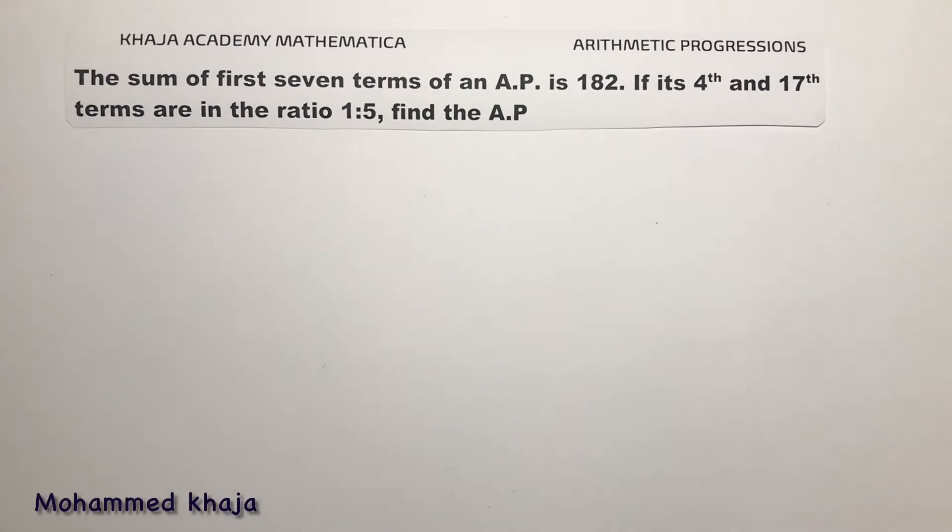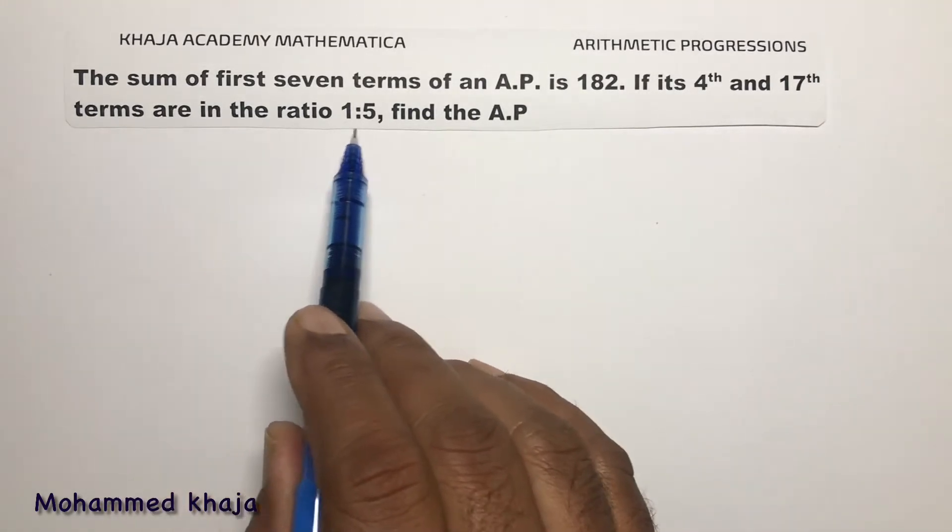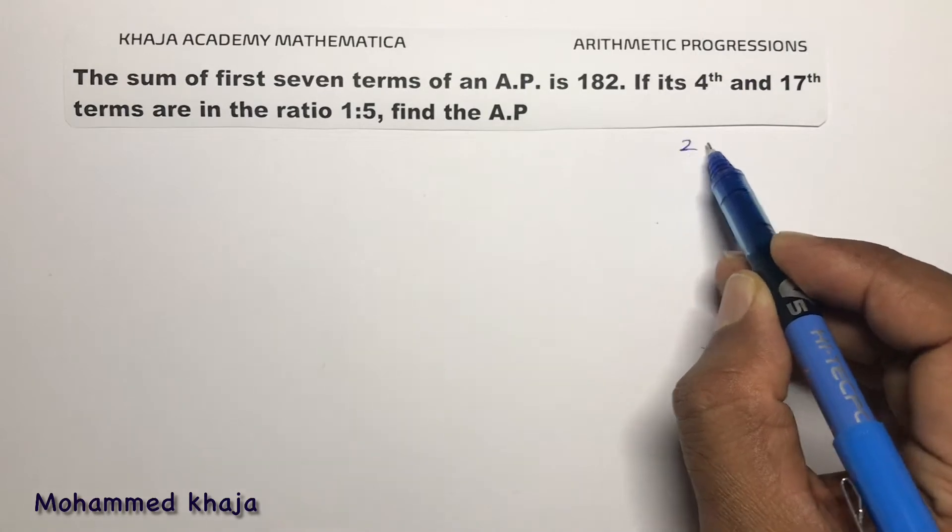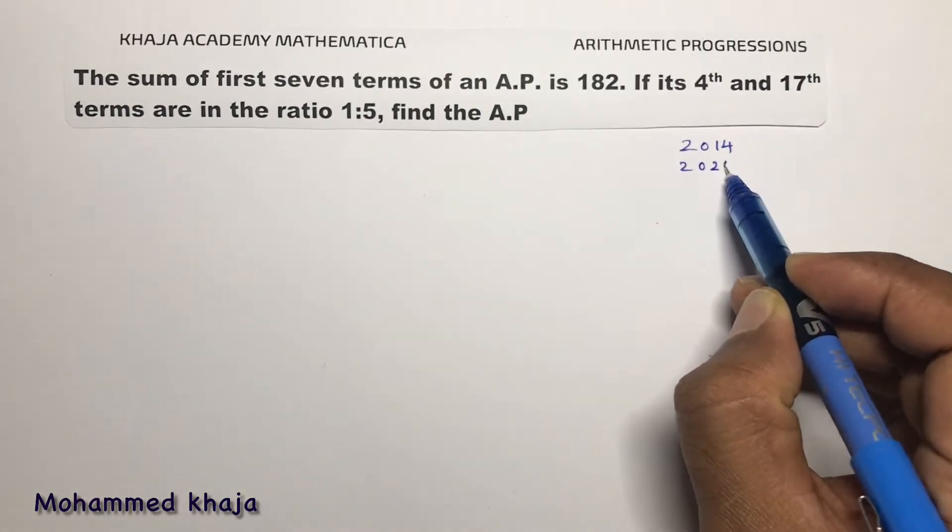The sum of first seven terms of an AP is 182. If its 4th and 17th terms are in the ratio 1 is to 5, find the AP. This question in CBSE was asked in the year 2014 and 2020.